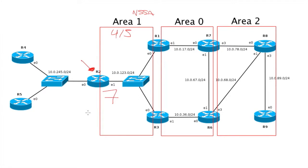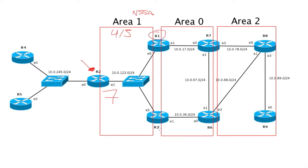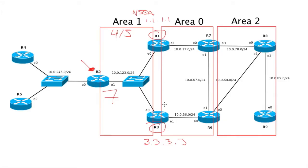The type 7 only exists in that area. The ABRs will translate it to a type 5, but interestingly it doesn't get translated by all of them — only by the one with the highest router ID, which in our case is probably router 3 because it has a router ID of all 3s. Router 3 will take that information from the LSA type 7 and create a new LSA type 5, send it out to area 0, and it will be sent to the rest of the topology. LSA type 5 has a scope of the entire routing domain, so it will go to area 2 and any other areas.